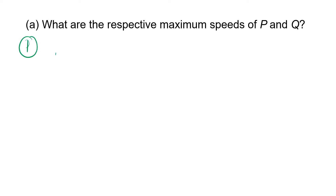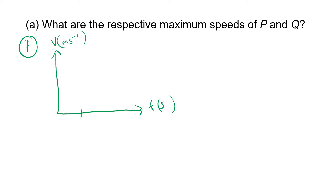The best approach is using a graph. For runner P, we plot v (ms⁻¹) against t (seconds). The known time values for P are 2 seconds and 12 seconds. From 0 to 2 seconds it is accelerating, so the graph rises, and after 2 seconds it maintains speed — that flat line represents the v-max we want to find.